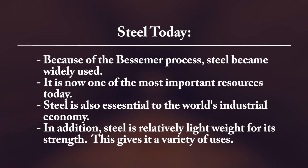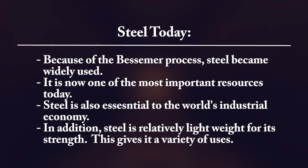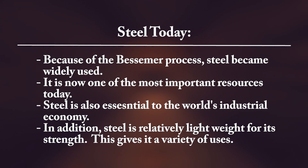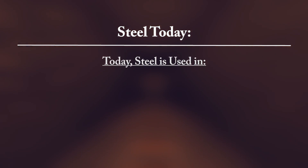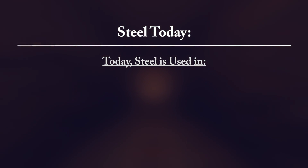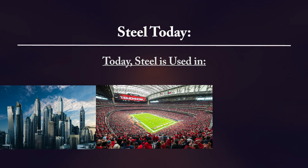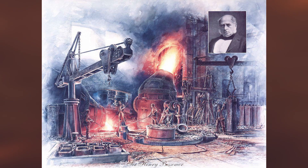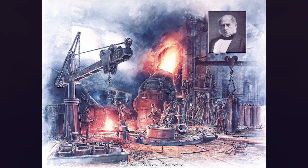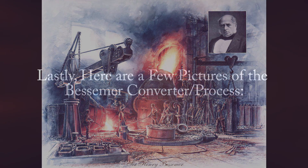Steel is essential to the world's industrial economy. Steel is also relatively light, yet extremely strong and durable, giving it loads of applications. Because of this, steel's main use today is for construction, specifically skyscrapers, stadiums, and many other types of buildings. As you have seen, the Bessemer process paved the way to the implementation and mass production of modern-day steel. Without Henry Bessemer and his converter, it would be hard to see the world as it is today.